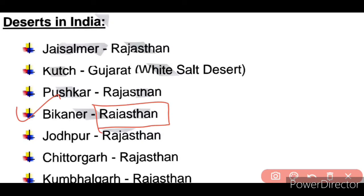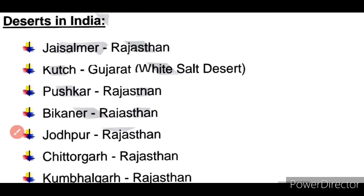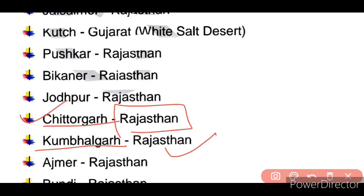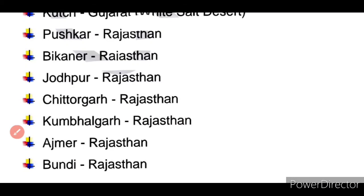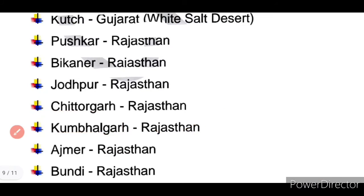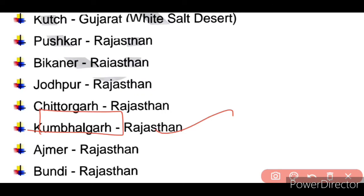Next desert is Chittorgarh Desert, also in Rajasthan. Kumbhalgarh Desert is also in Rajasthan. There is also a desert in Ajmer, Rajasthan. In Khimsar, Rajasthan, there is also a desert.